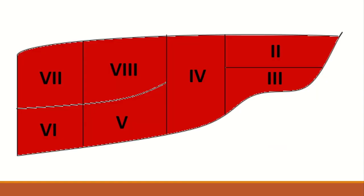Beyond liver arterial anatomy, it is useful to know the classic anatomy of the liver lobes. Lobe I, or the caudate lobe, is posterior to the rest of the liver and thus not seen on this anterior view diagram. The caudate lobe is unique as it is often fed by branches off both the right and left hepatic arteries and directly empties into the inferior vena cava. Lobes II through IV make up the left portion of the liver fed by the left hepatic artery, while lobes V through VIII make up the right portion fed by the right hepatic artery. Lobes VI and VII are posterior, while lobes V and VIII are anterior.